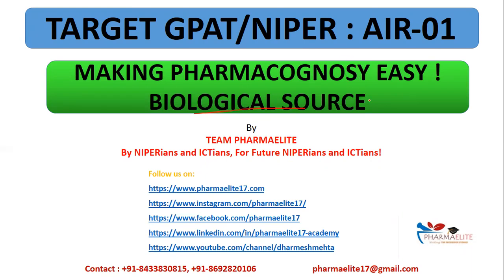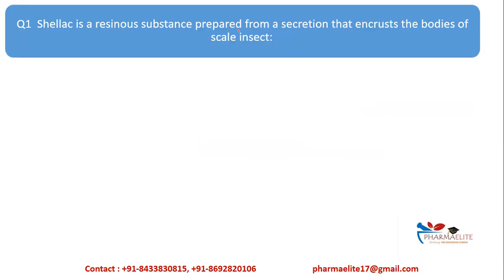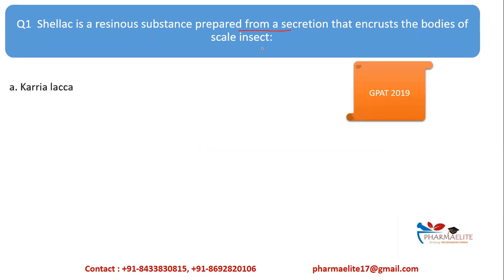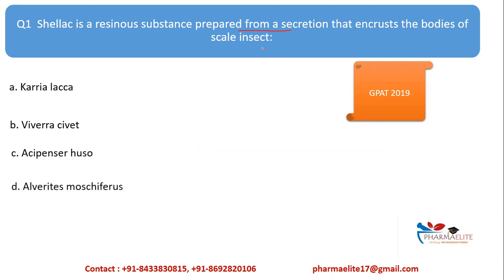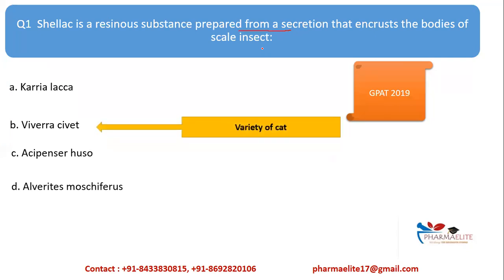The first question: Shellac is a resinous substance which is prepared from the secretion that encrusts the bodies of a scale insect. We need to look at the options and first determine which of these is an insect.